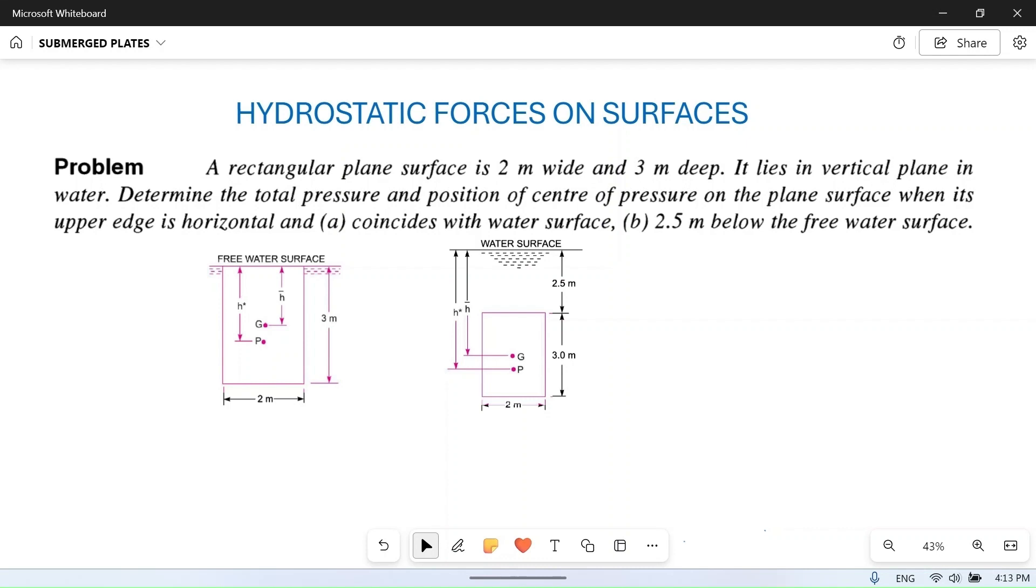Let's read the problem: A rectangular plane surface is 2 meters wide and 3 meters deep. It lies in vertical plane in water. Determine the total pressure and position of center of pressure on the plane surface when (a) its upper edge is horizontal and coincides with water surface.